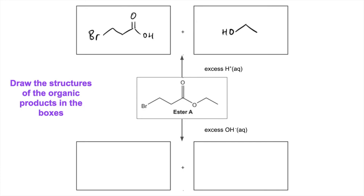For the alkaline hydrolysis, notice it doesn't say sodium hydroxide — it just says hydroxide ions. We still break this bond. We still get the alcohol. But here we get a carboxylate ion. And there's a catch in this one because this bromine will substitute for a hydroxyl group. And so we're going to get that.